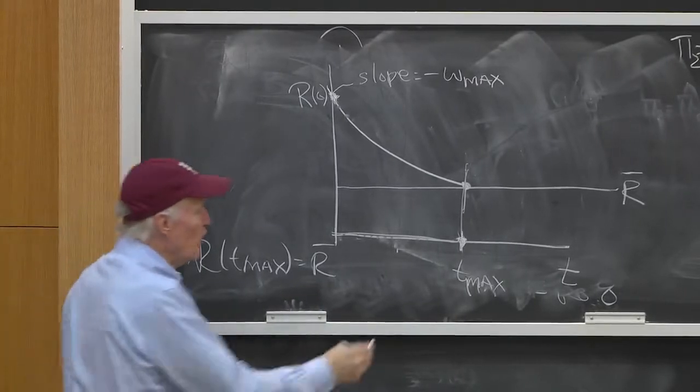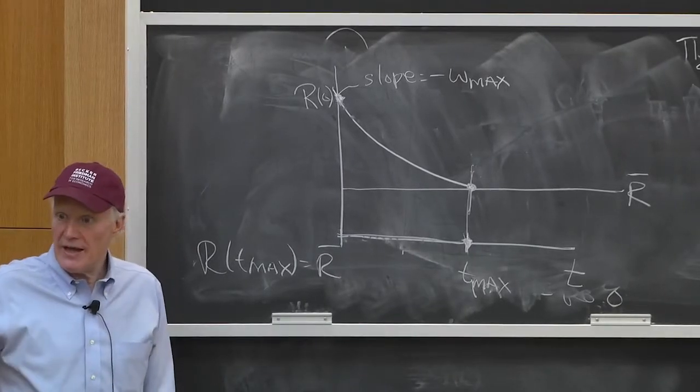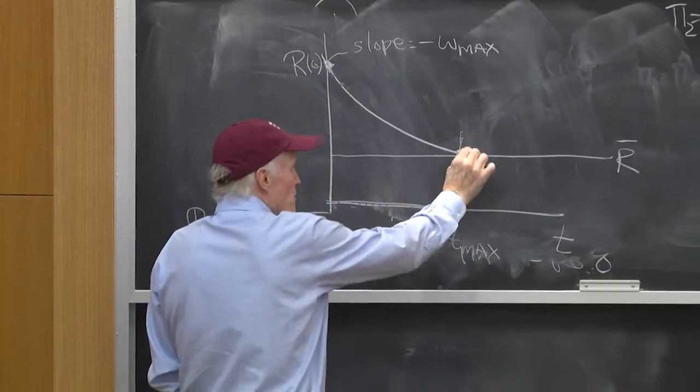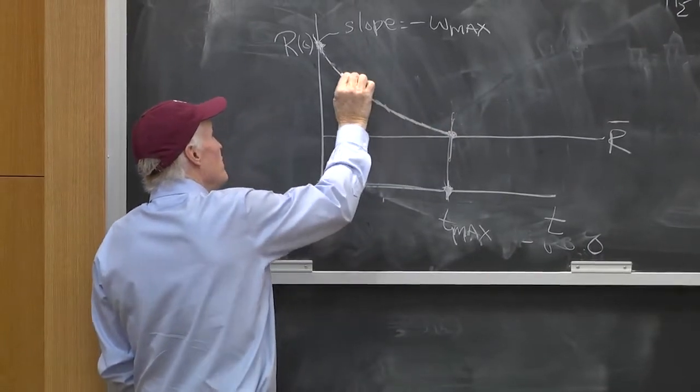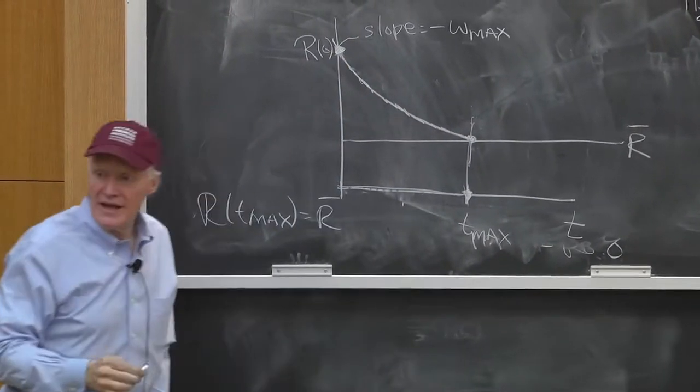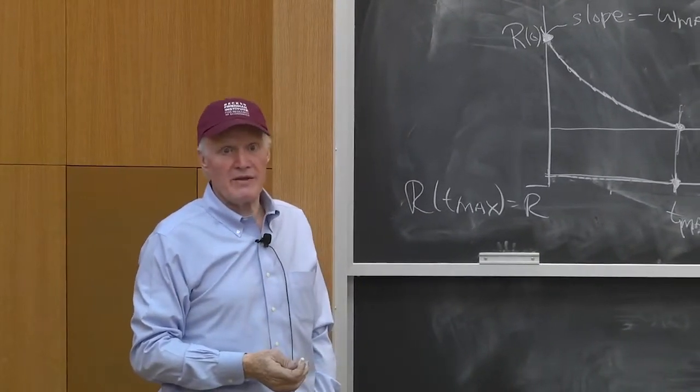Then I know the slope there has to be equal to the wage of the lowest wage guy. And then I just start following my differential equation up that curve until I get to the center of the city. And at that point, I got the rent in the city.